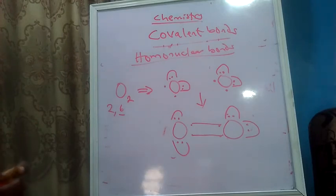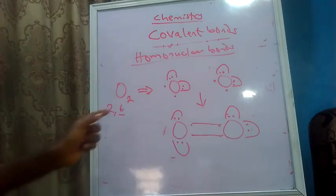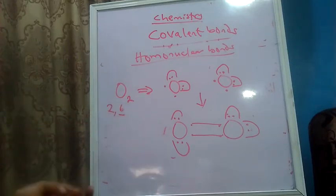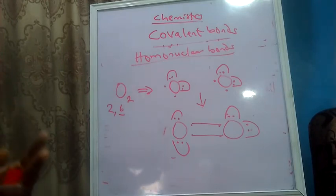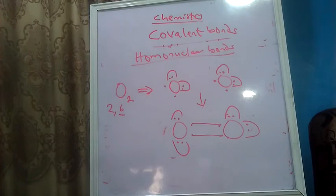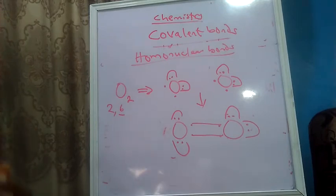The double bond is holding the oxygen molecule together, unlike chlorine. How do we know this? Because oxygen has two unpaired electrons, and two unpaired electrons have a tendency to form two bonds. An atom with one unpaired electron has a tendency to form a single bond.